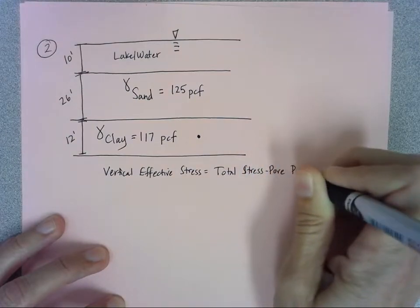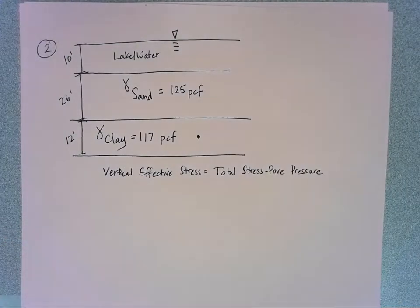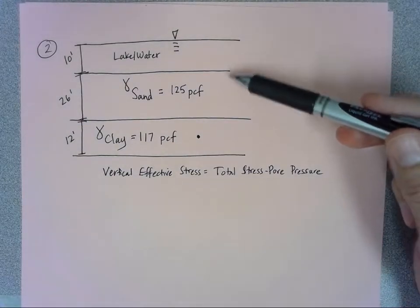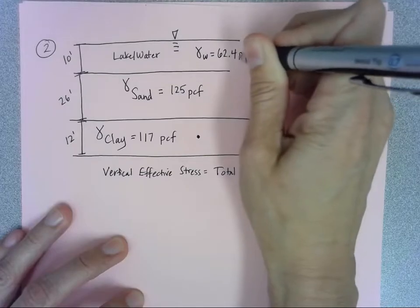We've got a lot of water going on here, so everything is going to have to subtract off the water. We've got that lake starting at the top - this would just be our gamma water, which would be 62.4 pounds per cubic foot. I'll go ahead and use that as one of my sigmas.